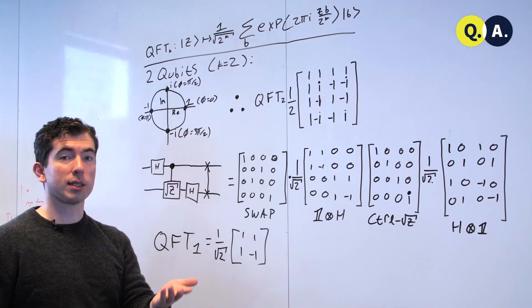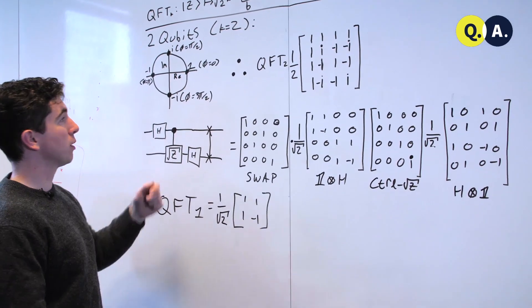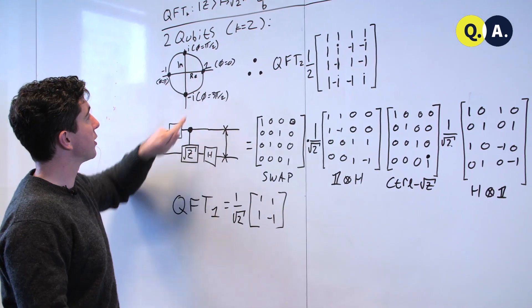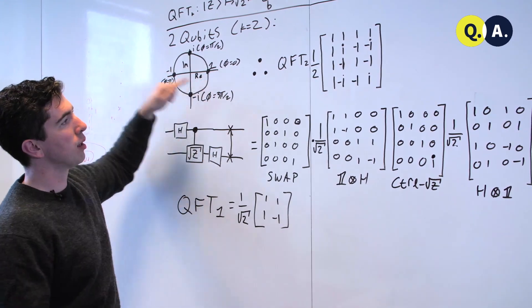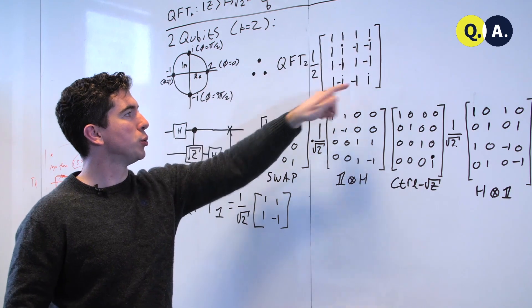If we take two steps at a time for the input state 2, or 10 on two qubits, we end up with 1, -1, 1, -1, exactly as we see on the 2 state here.